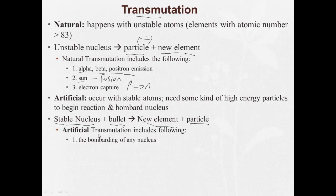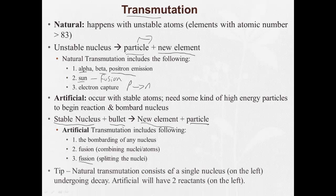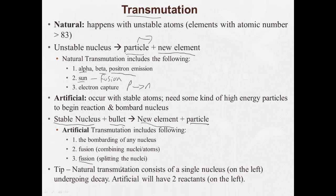Artificial transmutation includes the following: the bombarding of any nucleus, artificial fusion, as opposed to just a natural fusion that takes place in the sun, and fission, which is involved in splitting a large nucleus into smaller items. Important tip to remember, natural transmutation consists of a single nucleus on the left, so there's just one thing on the left undergoing decay. Artificial will have two reactants on the left, the large nucleus and that small bullet.